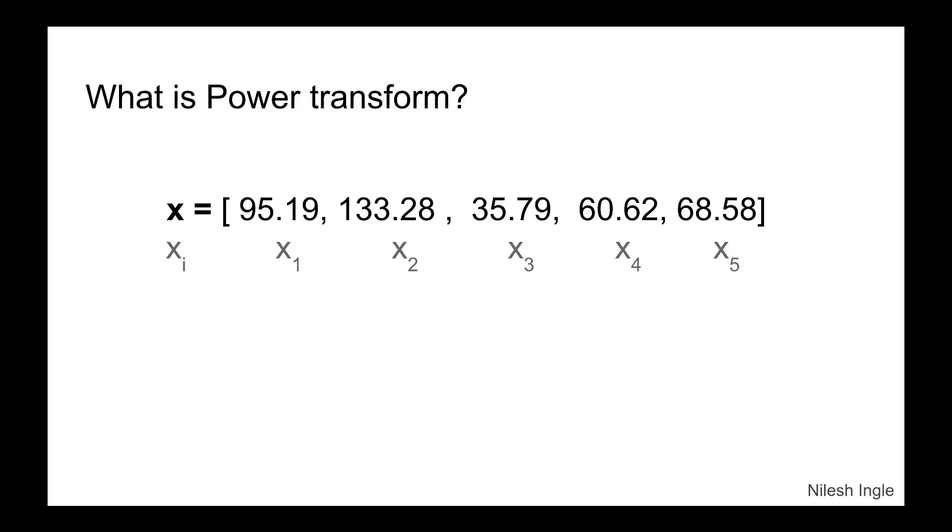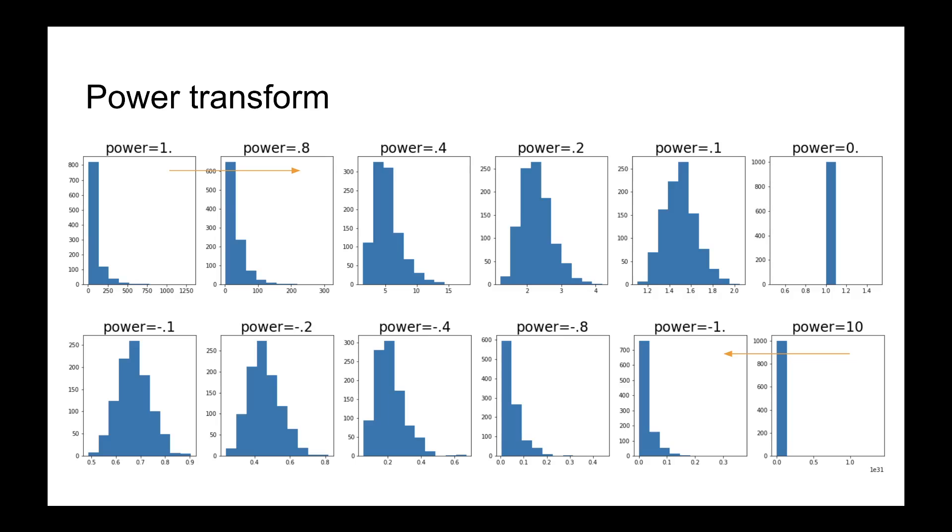Now if we were to do a simple power transform of these numbers and we were to raise this to power of 0.1, then this is the transformed dataset. And here we have 95.19 is now changed to 1.57. So that's a power transformed data.